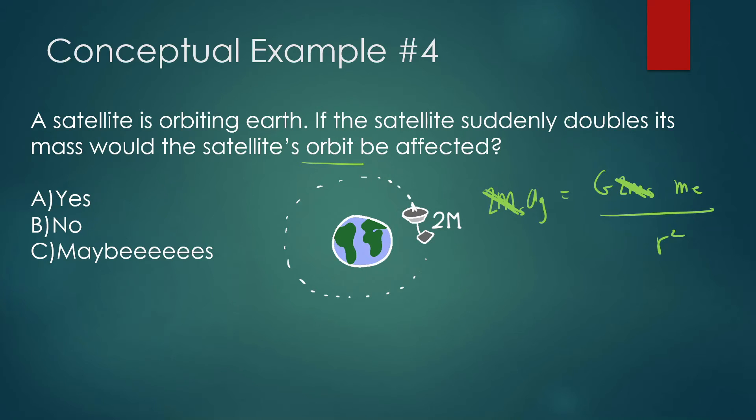So the orbit won't be affected. The satellite will still be moving around at the same rate and in the same way, no matter what the mass of the satellite is. The mass cancels out, so it doesn't matter.